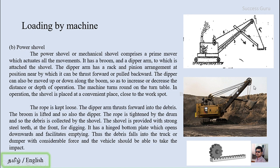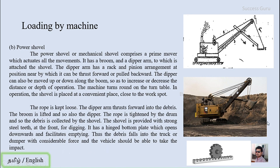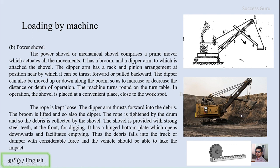When the rope is kept loose the dipper moves easily, and when thrust is given it pushes the sediment into the bucket or scrapper. The rope is then tightened by the drum, lifting the dipper upward and collecting the debris in the shovel. The shovel is provided with strong steel teeth at the edge so it can dig to greater depths. At the front for digging it has a hinged bottom plate which opens downward to facilitate emptying, dropping the debris into a truck, dumper, or conveyor belt with considerable force. The vehicle must be able to take that impact.